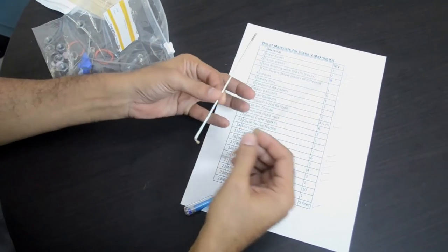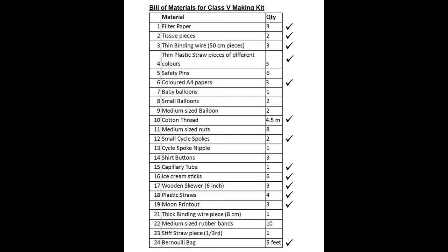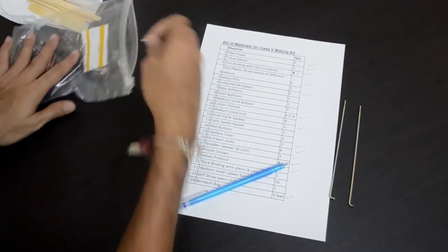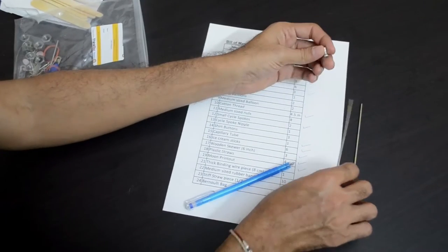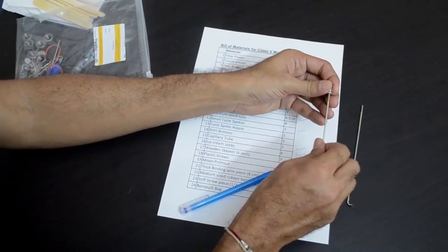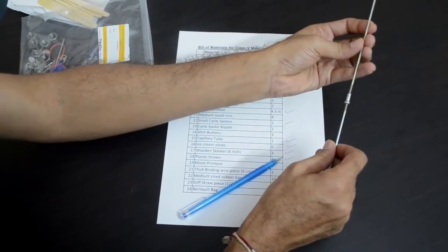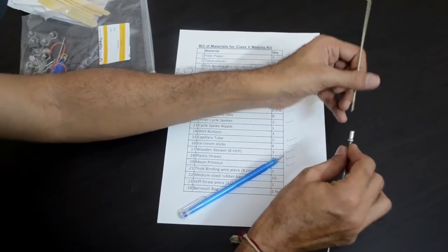Then you will find these small cycle spokes, there are 2 of them. You will need that for the beam balance activity. That is item number 12 in our bill of materials. To join these 2 spokes, we also need 1 nipple, a cycle spoke nipple. You will find 1 nipple also in your kit. Please identify the nipple carefully so that you don't misplace it, it is a small item.